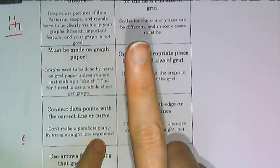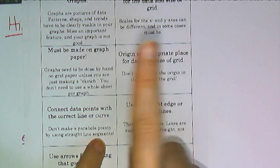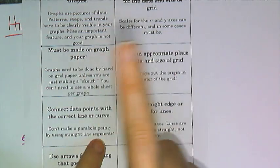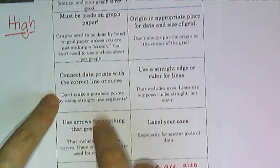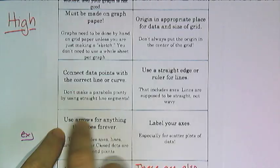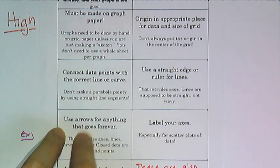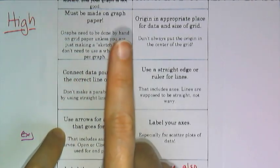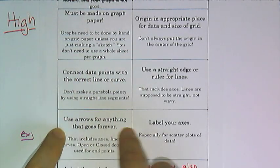You've got to use a straight edge or ruler for lines. Don't hand-draw a line, don't hand-draw your axes — they end up all wonky and wavy, and that is not high quality. Here's another big one: use arrows for anything that goes forever. Your axes go forever, so you've got to use arrows.